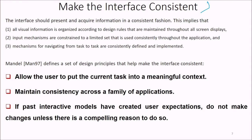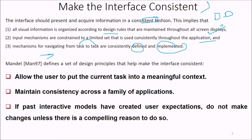Making your interface consistent means the interface should present and acquire information in a consistent fashion. All visual information is organized according to design rules maintained throughout all screen displays — everywhere the same. Input mechanisms are constrained to a limited set used consistently through the application. Navigation mechanisms from different tasks are consistently defined and implemented.